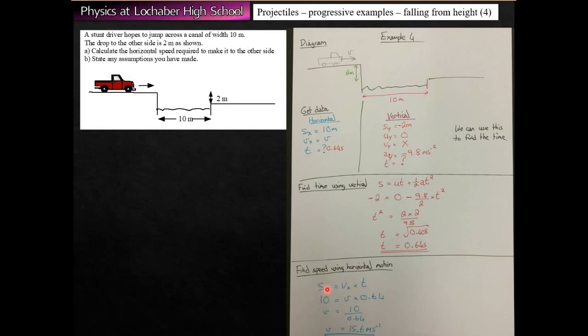Using distance equals speed times time, we can work out the minimum horizontal speed required to cross the 10 meters in 0.64 seconds. For the assumptions: we're ignoring air resistance, the car doesn't need leftover speed on landing, and we're not accounting for whether we measure from the front or back of the car, or the fact the car might start rotating after leaving the ground. There are many things we're ignoring because they're complicated, as long as you're honest about it.